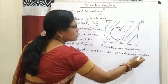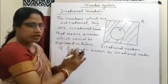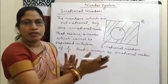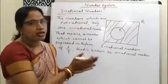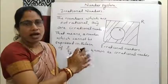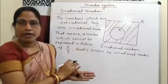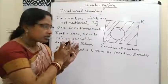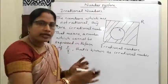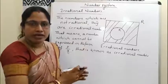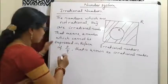We conclude that rational numbers are different from irrational numbers. Numbers which are not rational are irrational. If we combine all the rational numbers with irrational numbers, they form a set known as real numbers.